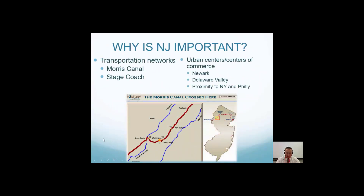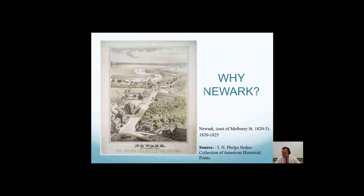So why is New Jersey important in all of this? Number one, the Morris Canal, which we've studied. Also, New Jersey was a hub of manufacturing of stagecoaches. Also, urban centers — we have Newark, we have the Delaware Valley. And don't forget that New Jersey is very close to New York and Philadelphia, two large urban areas. You may also ask why Newark?